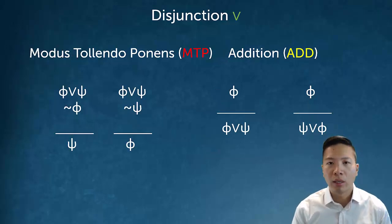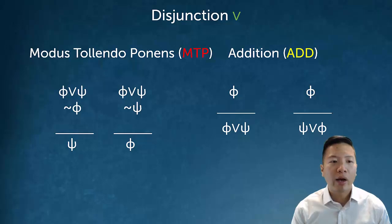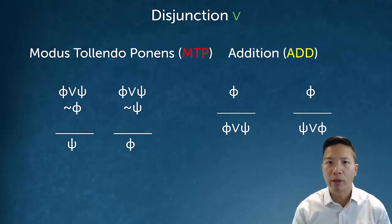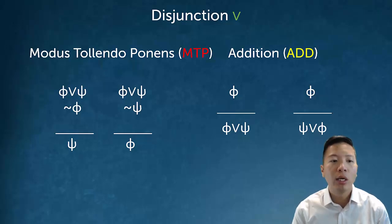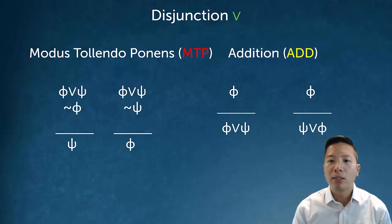Disjunction also has an elimination and an introduction rule. The elimination rule for or is called modus tollendo ponens, or MTP for short. If I have an or statement like phi or psi, and I have not one of them, then I can conclude the other. That's what or means in regular language. So if I have phi or psi and I have not phi, I conclude psi — or if I have not psi, I can conclude phi.